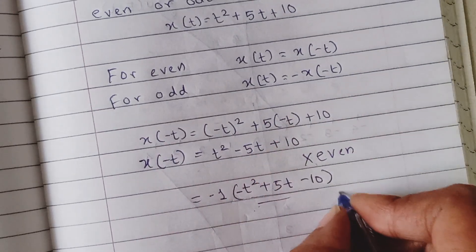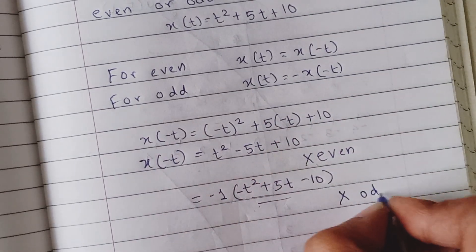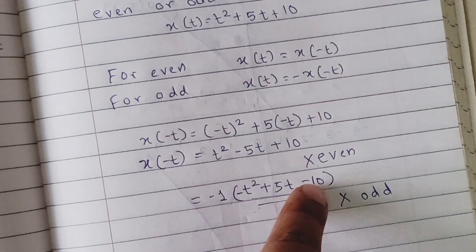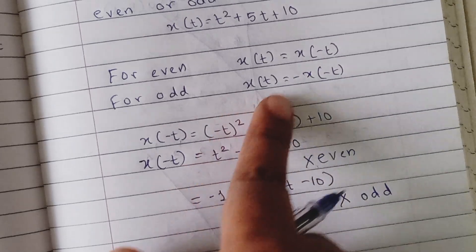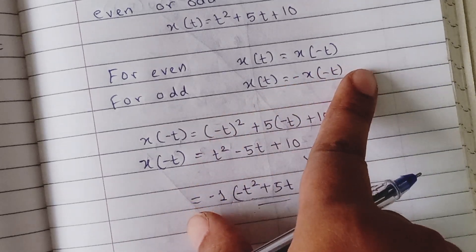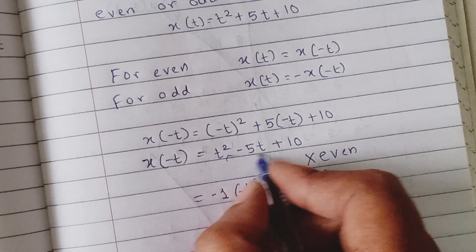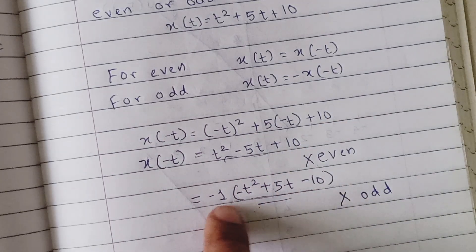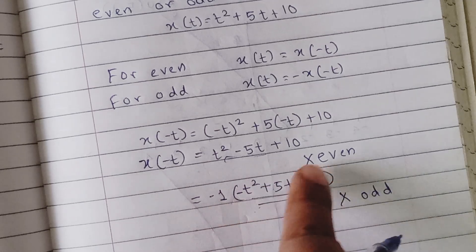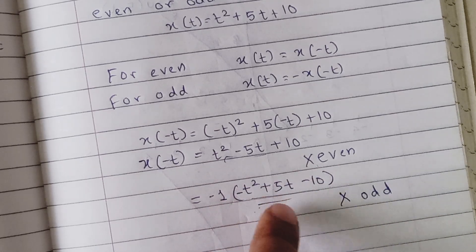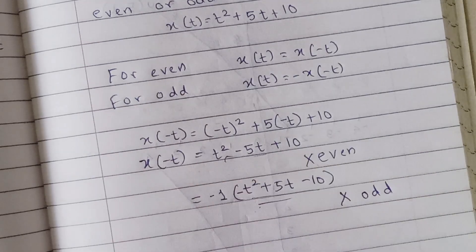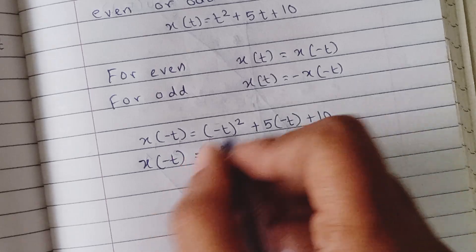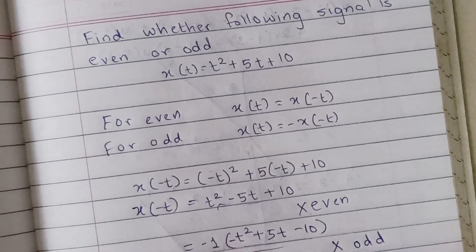So you can say that this is neither odd signal as well. So this signal that we have been given is neither even nor odd because x(t) is not equal to x(-t). It's also not equal to minus of x(-t). So even if you take -1 outside and you try to find out what we have inside the brackets, this is not equating to our x(-t). So it's still not an odd signal. So this signal is neither even nor odd.